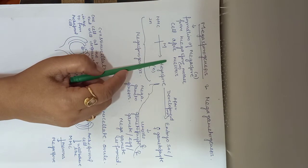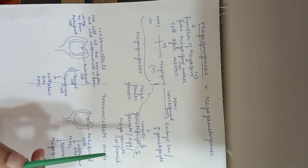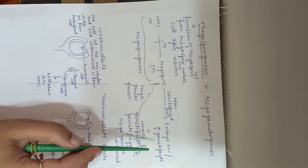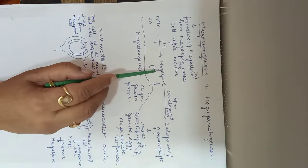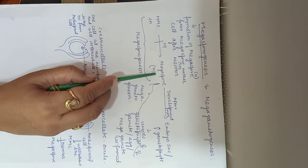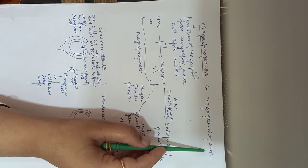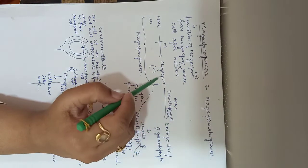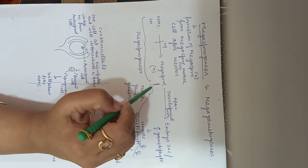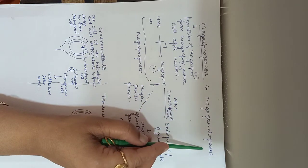Megasporogenesis is the formation of megaspore from megaspore mother cell, and the formation of gamete from the megaspore is known as megagametogenesis. Formation of gamete from megaspore is known as megagametogenesis.